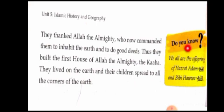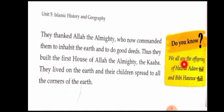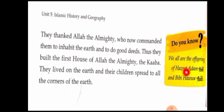Dear students, look at the yellow portion. Do you know we are all the offspring of Hazrat Adam alayhislam and Bibi Hawa alayhislam? Underline the word offspring — offspring means children. It means we are all children of Hazrat Adam alayhislam and Bibi Hawa alayhislam. So dear students, that is the reading about the topic Prophet Hazrat Adam alayhislam. Let's read the topic again.